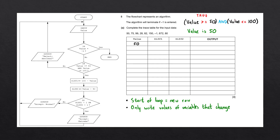Now evaluating the right side: value is less than or equal to 100, meaning the value can either be less than 100 or equal to 100. We can now evaluate the AND operator since we have two boolean values on the left and right. The condition for AND is that both sides need to be true for the entire condition to be true. That is the case, so this entire condition evaluates to true.